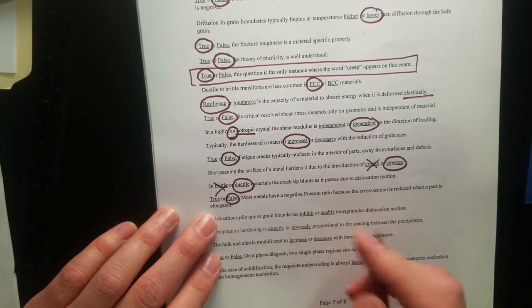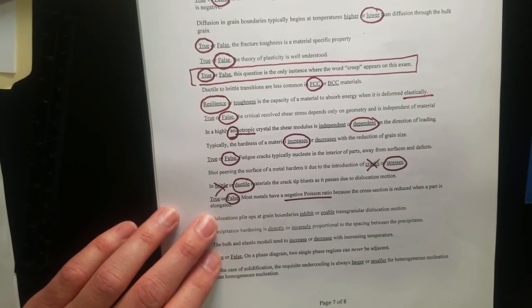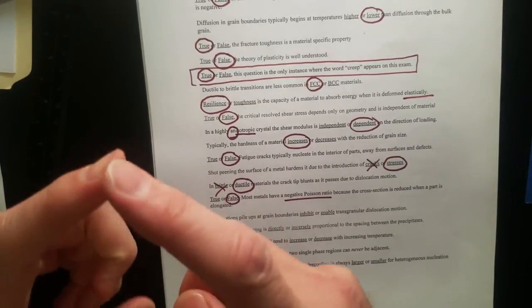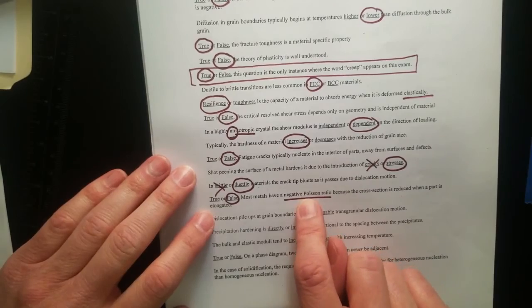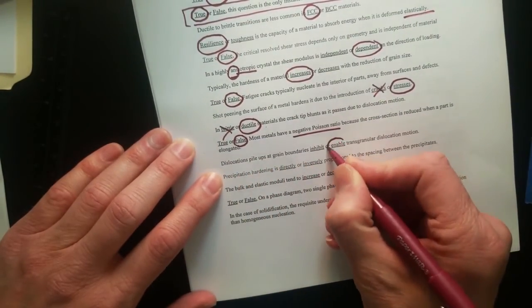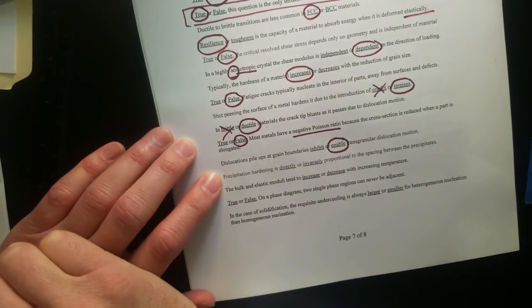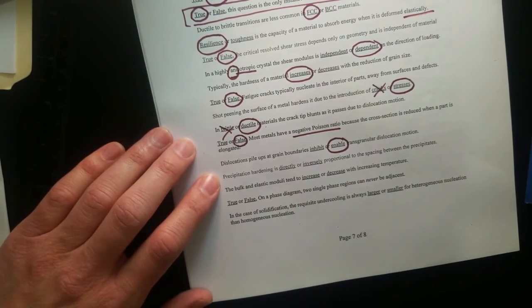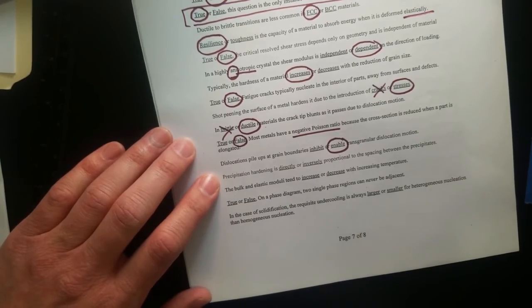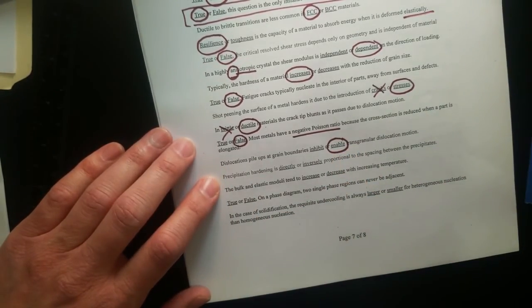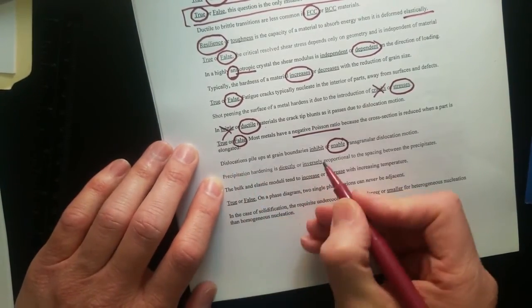False. Most metals have a negative Poisson ratio. Most metals, most materials in general have a positive Poisson ratio. There's a few weird materials like cork, and there are some ceramics also that have negative Poisson ratios that they've been designed so that the atomic structure has kind of hinge structures. So as you pull on it, the cross section enlarges. Dislocation pileups at the grain boundaries enable transgranular dislocation motion. What happens is as you get dislocations that pile up, the stress increases on the neighboring grains, and that's what enables dislocations to jump across a grain boundary. It's not even that the dislocations jump, it's that the stress from the dislocations at the boundary result in new dislocations forming.